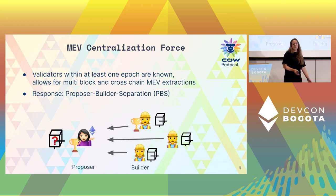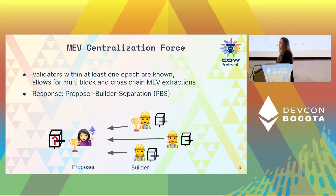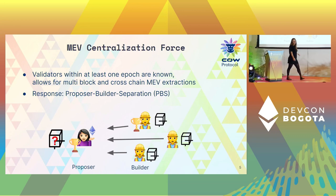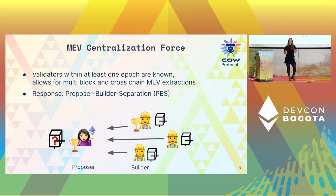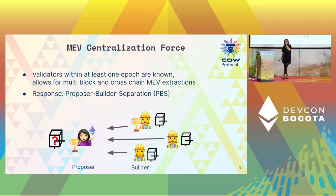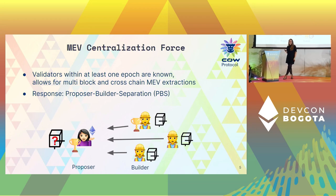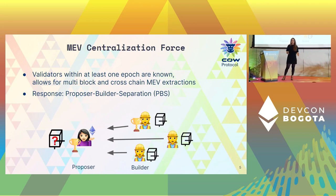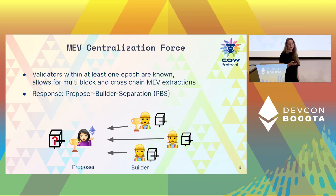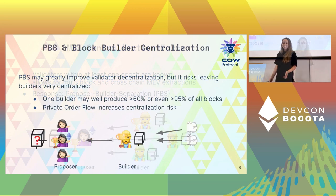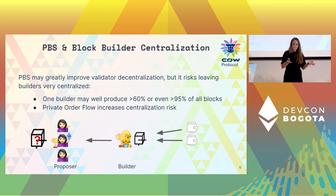The response to that is PBS — proposer-builder separation — where you divide the validator's tasks into two roles: the block proposer and the block builder. Block builders compete against each other, and the one able to extract the most value wins by bidding the highest payment to the validator.